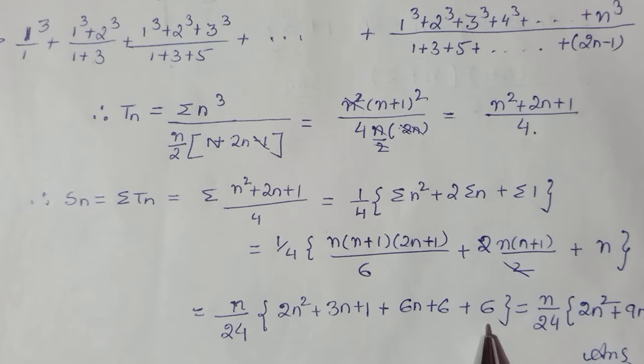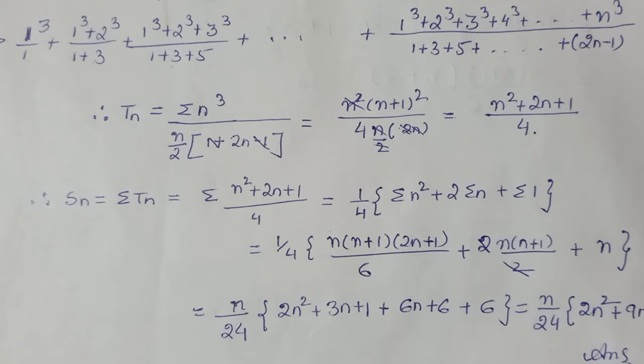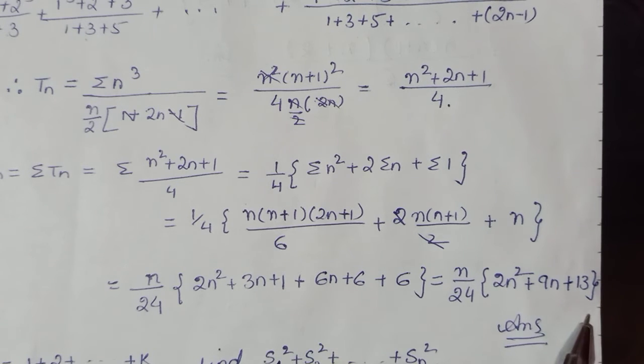6 will be distributed to both and this n. Toh hamne common ne liya tha, toh plus 6, only LCM liya kiya humne. Usko calculate karo, manipulate karo aage ko. So if you put all together, this is what your answer is coming: 2n² + 3n, 6n is 9n, 6 + 6 is 12 and 1 is 13.